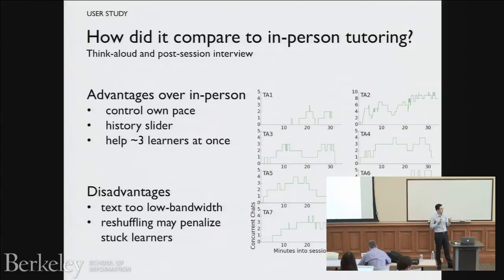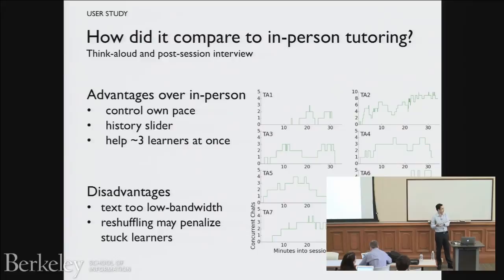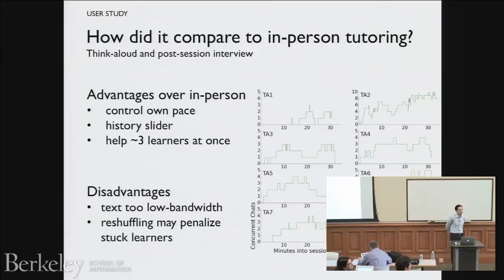Disadvantages: the main complaint was that text was too low bandwidth — you can only provide small, targeted pieces of help and can't have a great one-on-one dialogue. We're trading off quality for quantity. The other concern was related to the tile-shuffling heuristic: some tutors worried that people at the bottom of the dashboard weren't getting attention — maybe they were actually stuck and needed help but had no way to call for help. In a real classroom you'd see someone visibly frustrated, but without eye tracking or additional sensors it's hard to tell.